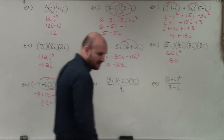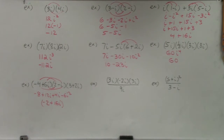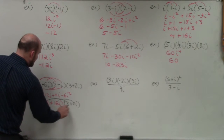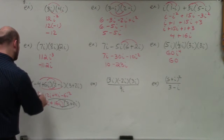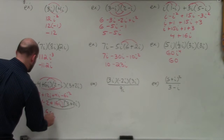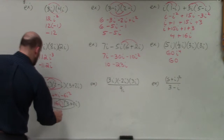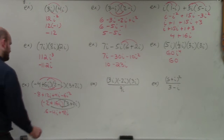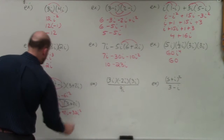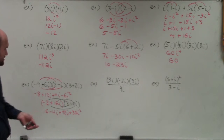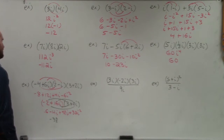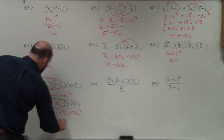Then I bring down the other factor: 3 plus 2i. Applying distributive property again: negative 2 times 3 gives me negative 6. Negative 2 times 2i is negative 4i. 16i times 3 is positive 48i. And 16i times 2i gives me positive 32i squared. i squared is negative 1, so negative 1 times 32 is negative 32. Negative 32 plus negative 6 gives me negative 38. And negative 4i plus 48i gives me positive 44i. Final answer: negative 38 plus 44i.